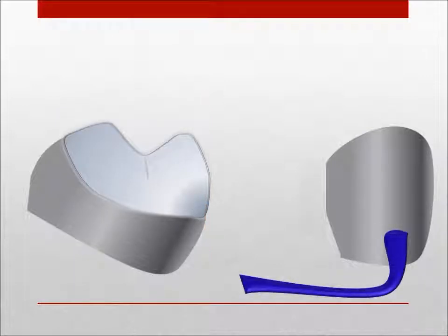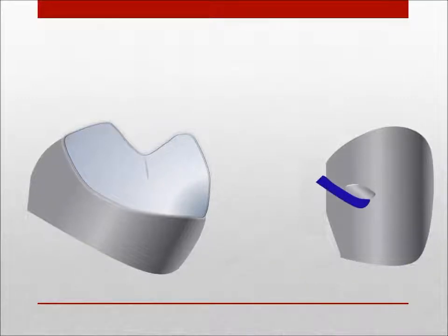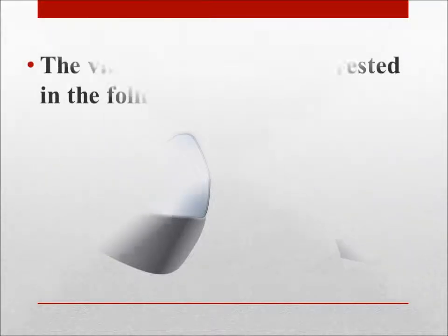The I-bar requires sufficient vestibular depth, at least 5 millimeters, minimal soft tissue undercut, and no interfering frenum attachments. If these requirements cannot be met, a small cast circumferential clasp located on the distal portion of the tooth may be aesthetically acceptable.